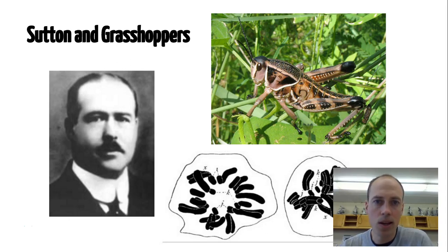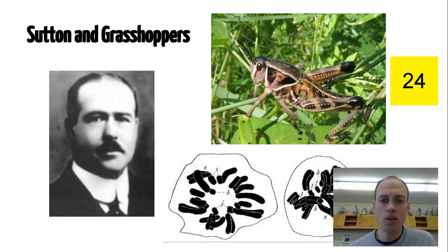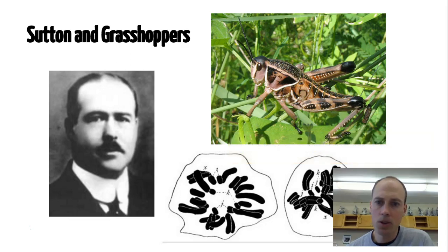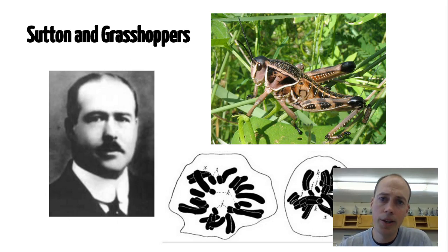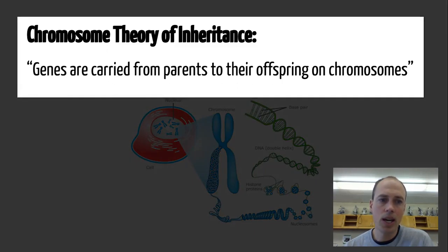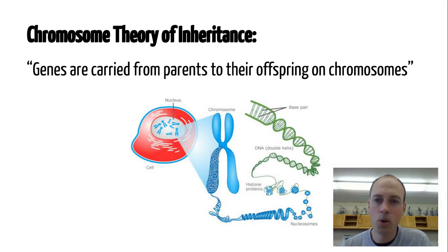He notices that the body cells of these grasshoppers have 24 chromosomes. We happen to have 46 as humans. Other organisms have different numbers, but grasshoppers have 24 chromosomes. Then he notices on the sex cells of these grasshoppers that they only have half that — 12. From that, he deduced that when a male sperm and a female egg form together and fertilization occurs, we go back to having that normal amount, 24, in the grasshopper's case. So he was really instrumental in figuring out this chromosome theory of inheritance — that genes are carried from parents to their offspring on chromosomes.